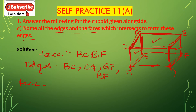Now this face EFGH. Edges: EF, FG, GH and HE. These are the edges intersecting with face EFGH to form edges EF, FG, GH and HE.